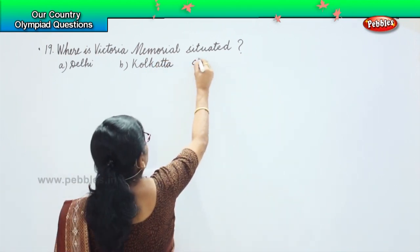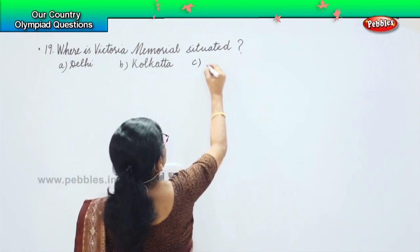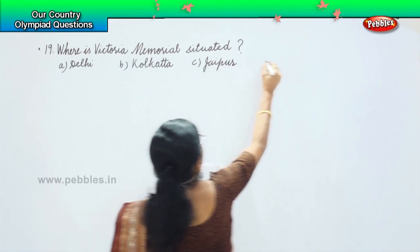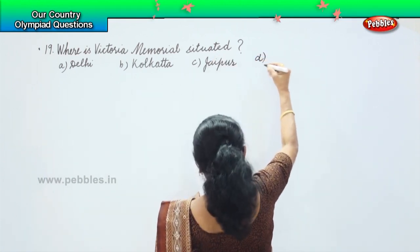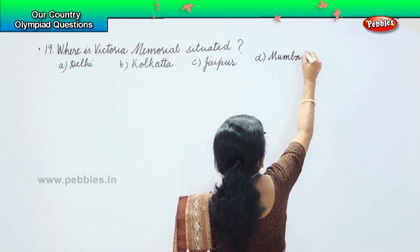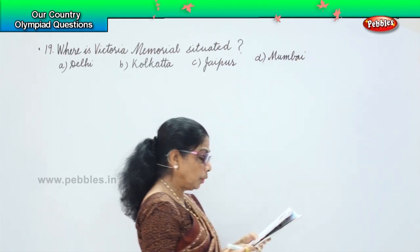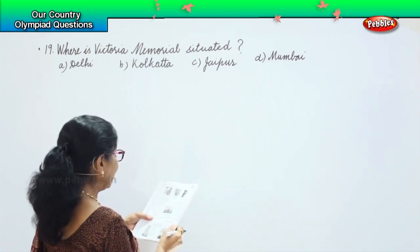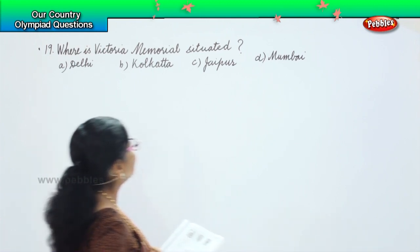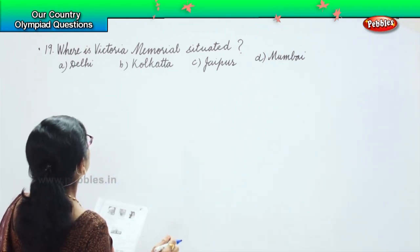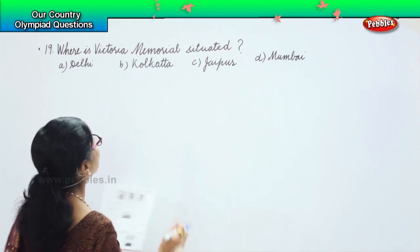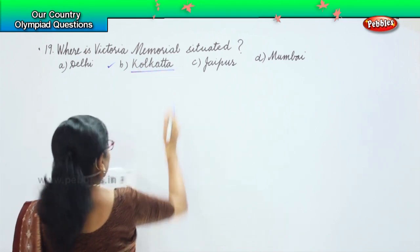Option C, Jaipur, and option D, Mumbai. We have been given four options — where is Victoria Memorial situated? Is it in Mumbai, Jaipur, Delhi? No. Victoria Memorial is situated at Kolkata. That is the answer.